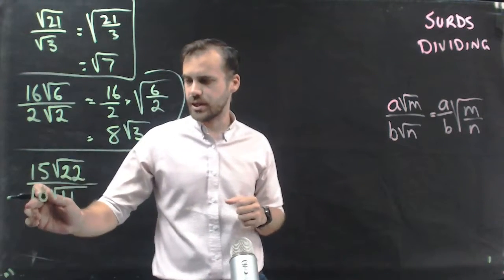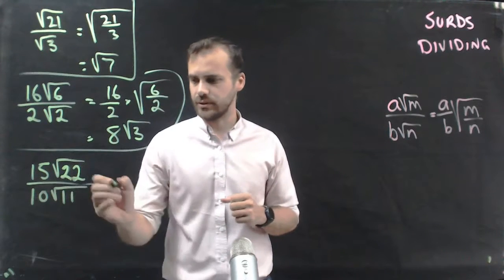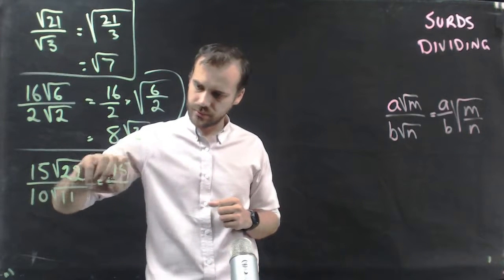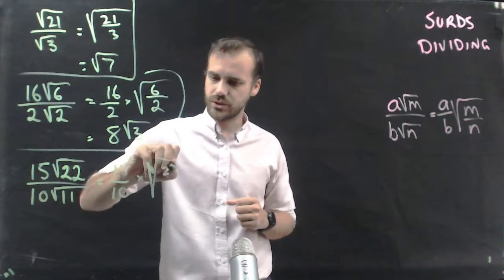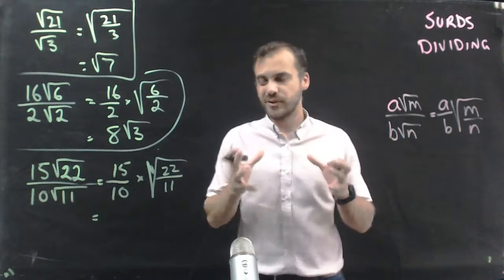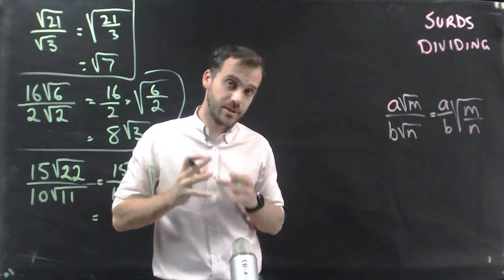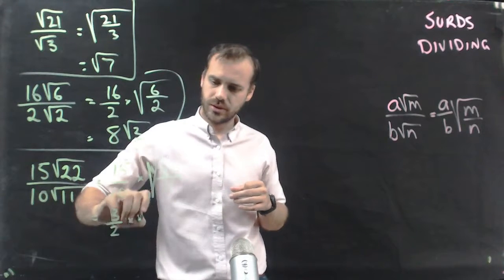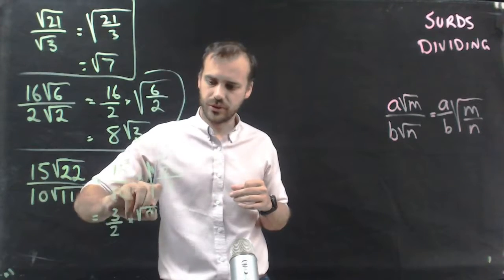This time, 15√22 over 10√11. Again, 15 over 10 isn't going to divide neatly like this one did. 15 over 10 can be simplified though. So (3/2) times √(22/11), that's going to be √2.